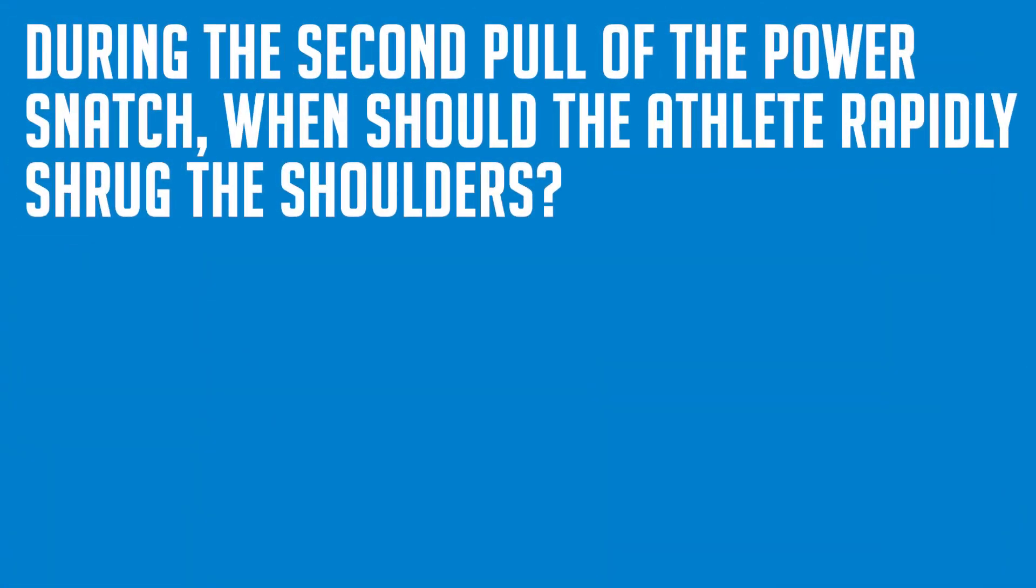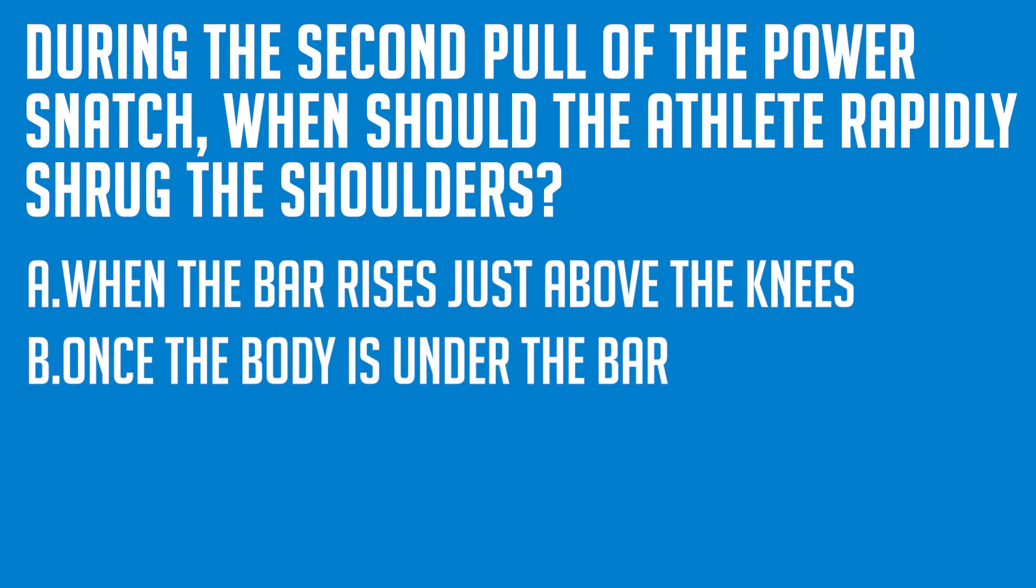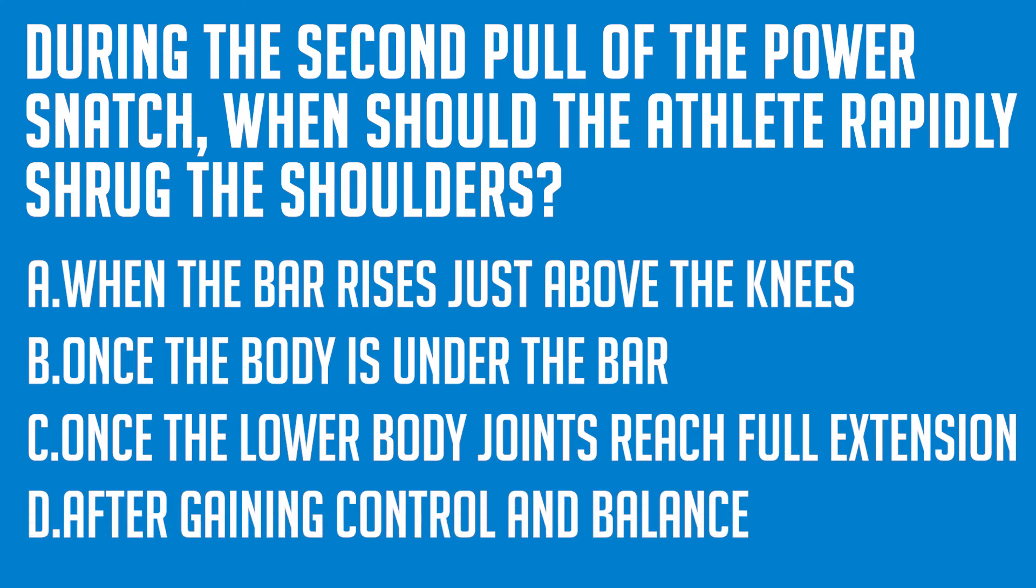During the second pull of the power snatch, when should the athlete rapidly shrug the shoulders? A: when the bar rises just above the knees. B: once the body is under the bar. C: once the lower body joints reach full extension or D: after gaining control and balance.